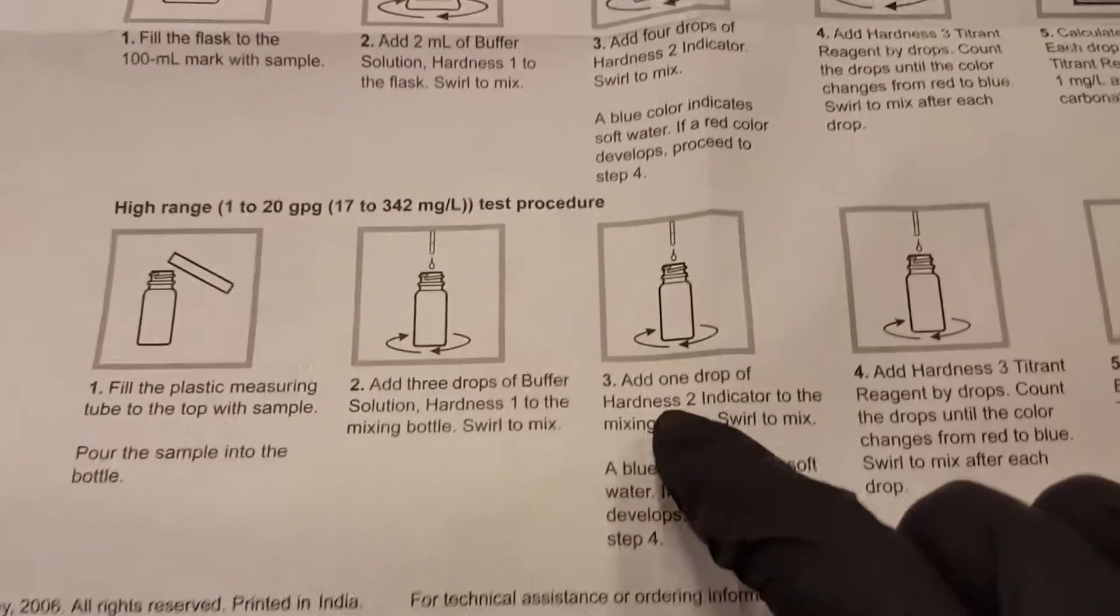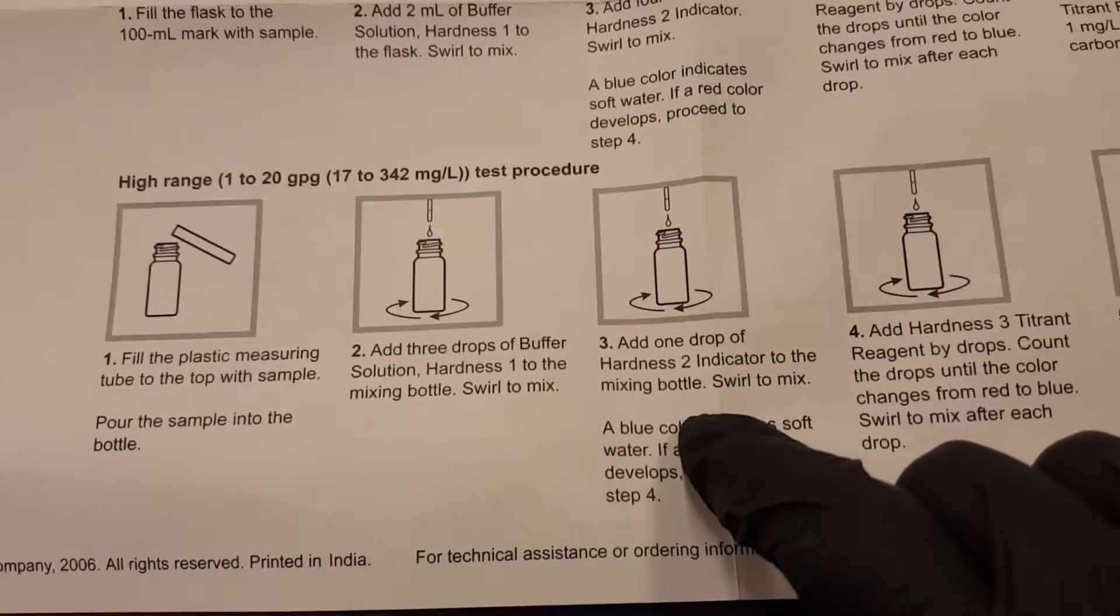Then step three says add one drop of hardness to indicator. Swirl to mix. That's this red stuff right here.